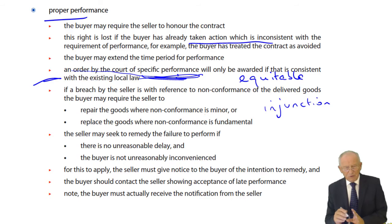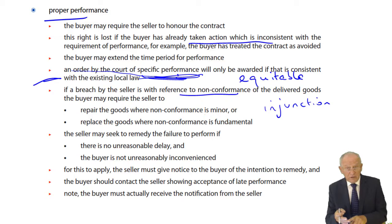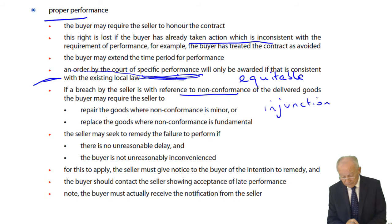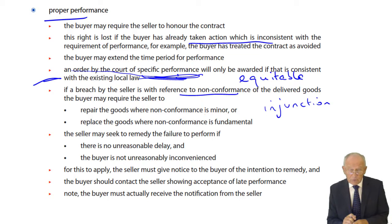We move on to the second type of proper performance problem: non-conformance. Non-conformance is where delivered goods do not conform with the details of the contract with reference to quality, quantity, description, and packaging. If the breach by the seller is with reference to non-conformance, the buyer may require the seller to repair them. If the non-conformity is minor and reparable, the buyer may require repair. But if it's beyond repair, the buyer may insist the seller replaces them — taking the damaged goods away and replacing with conforming goods.